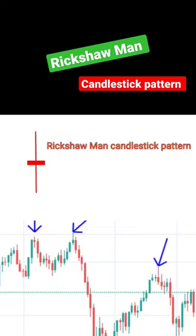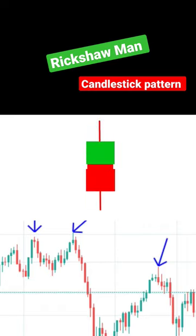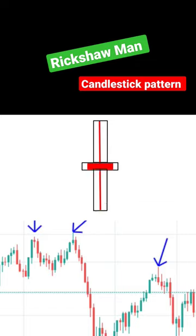The rickshawman pattern is characterized by a candlestick with a small body and long upper and lower shadows. It represents a state of equilibrium between buyers and sellers where neither side has gained control. The candlestick resembles a rickshaw, with its body in the middle and long shadows extending in both directions.